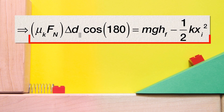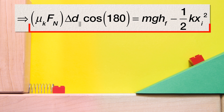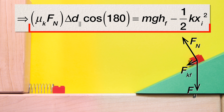Let's draw a free body diagram and sum the forces in the perpendicular direction. The force normal is up and perpendicular to the incline. The force of gravity is straight down and the force of kinetic friction is parallel to the incline and opposite the direction of motion, or down the incline. We can break the force of gravity into its components: the force of gravity perpendicular to the incline and down, and the force of gravity parallel to and down the incline.